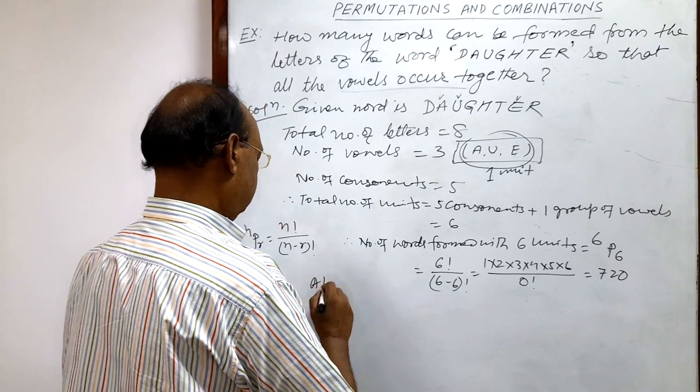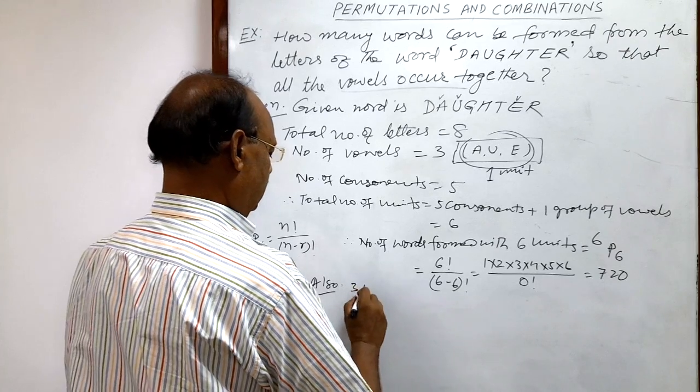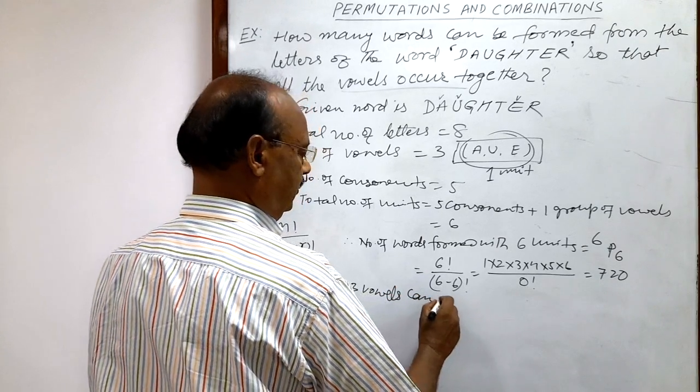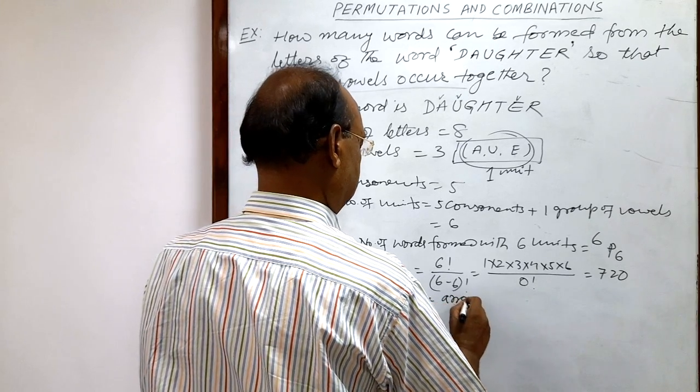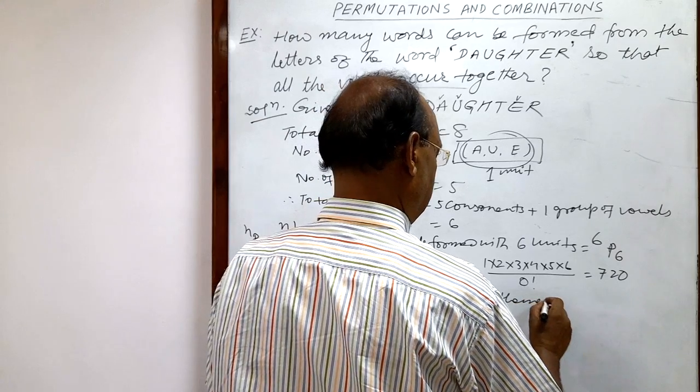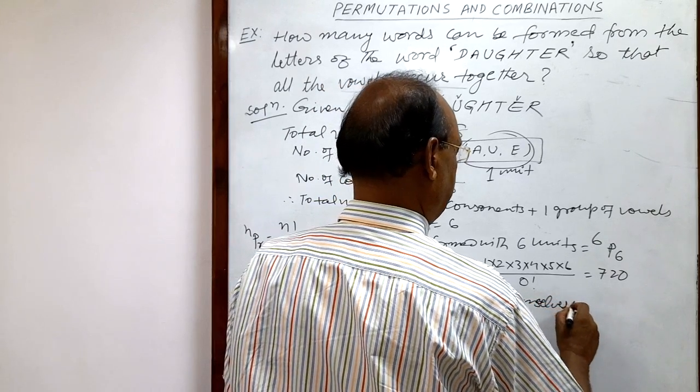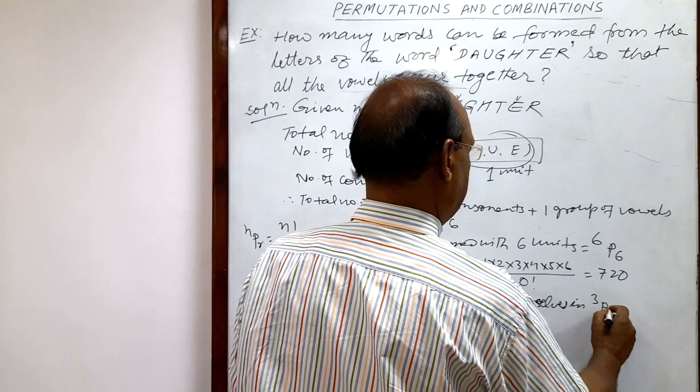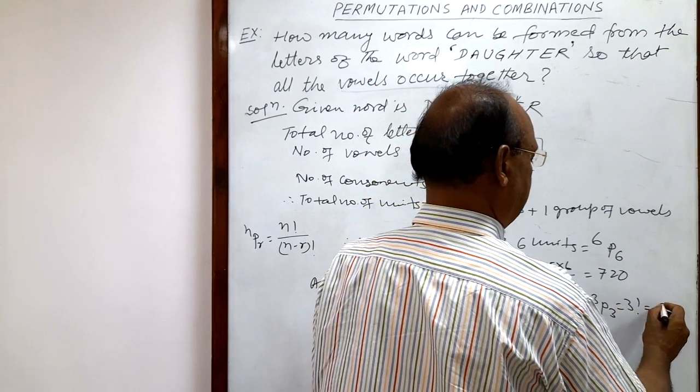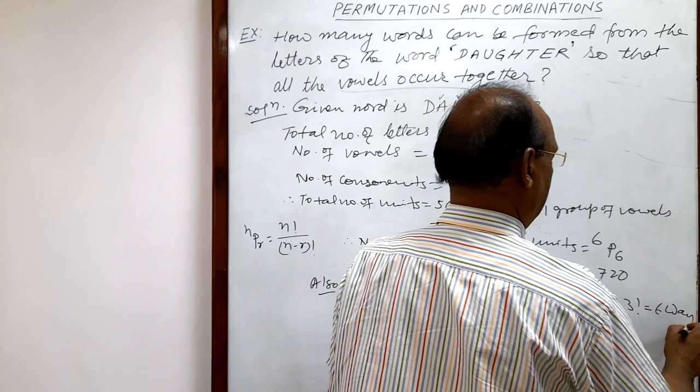Also, 3 vowels can arrange themselves in 3P3 is equal to 3 factorial is equal to 6 ways.